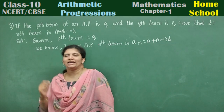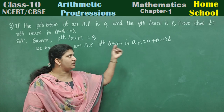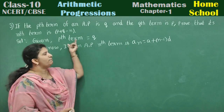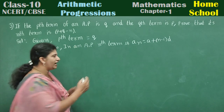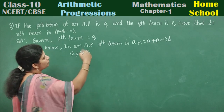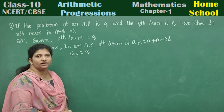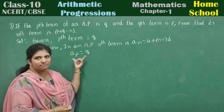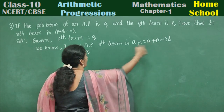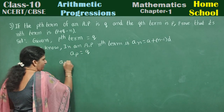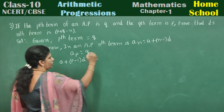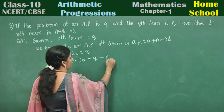We know in an AP the general term formula is an equal to a plus n minus 1 into d. Similarly, the pth term: ap is equal to q. And one more given — the qth term is p. By the general term formula, wherever you have n substitute p: a plus p minus 1 into d is equal to q. Mark as first equation.